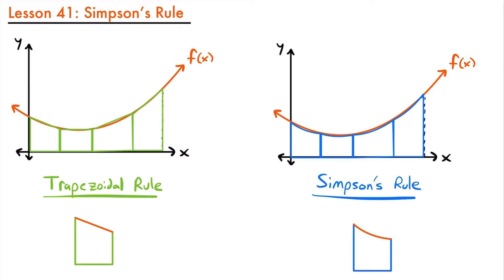However, we can get an even better approximation of the area under a curve if we were to use a second-degree polynomial, or a function such as x squared. And that is what Simpson's rule does. Instead of having this trapezoid shape where the top is a linear function, we have this shape where the top is a quadratic function, or a second-degree polynomial. You can see right here how much closer these curves fit the actual curve of the function as opposed to the straight lines used for the trapezoidal rule.